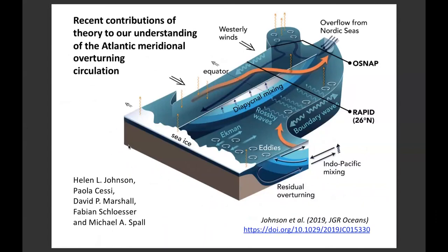Thanks so much, Jenny, and thanks everyone for taking the time to be here today. Over the last decade or two, new observational arrays in the North Atlantic together with a new generation of ocean and climate models have provided some intriguing insights into the Atlantic meridional overturning circulation, the AMOC, as we've heard in previous webinars. Theoretical models have provided a dynamical framework for understanding those new observations and the results of complex models. This paper reviews these theoretical model contributions to update our conceptual understanding of how the AMOC works. This paper was written with the help of four co-authors, and I should also thank Hatha de Boer who persuaded me to give an invited review talk at the 2017 IAPSO meeting on which the very first draft of this review paper was based.